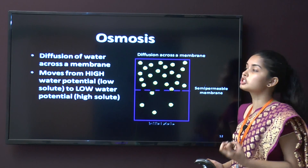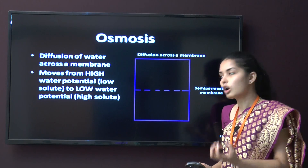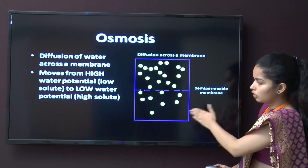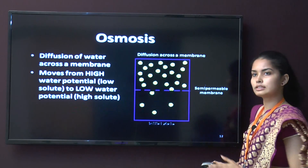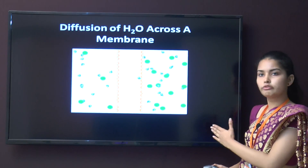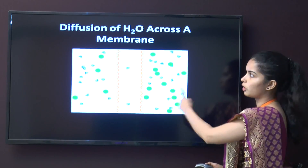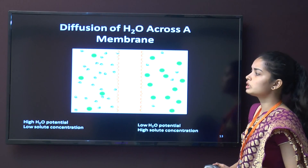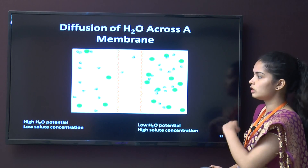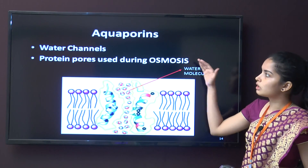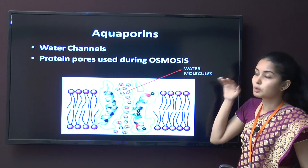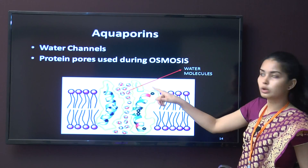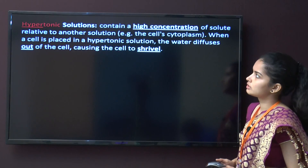Osmosis is the diffusion of water across a membrane. Only water molecules move from higher concentration towards the lower concentration through the semi-permeable membrane. Water molecules move from high to low concentration. Some water channels — protein pores that allow water to pass through — are known as aquaporins.